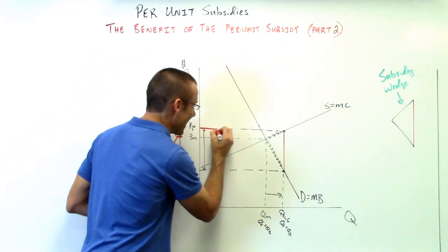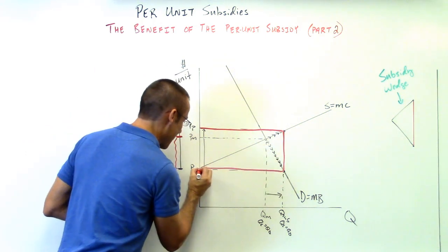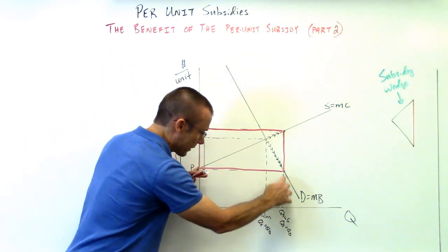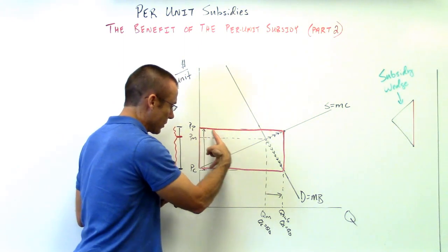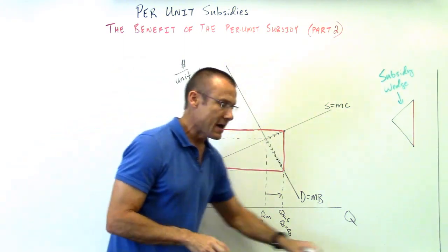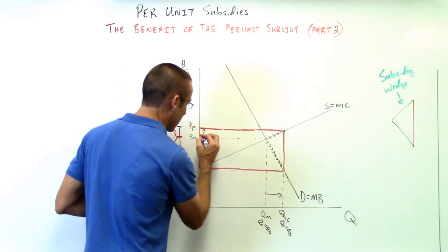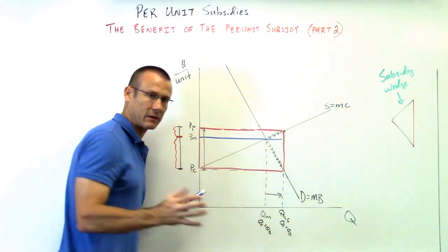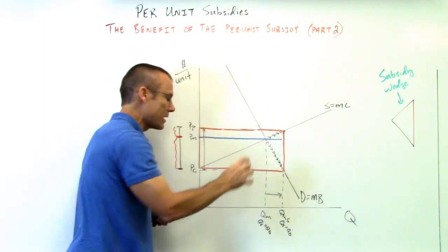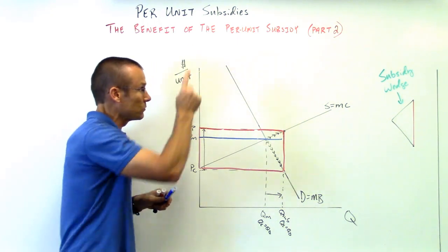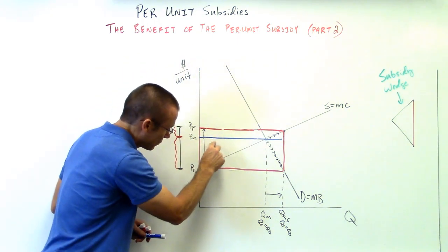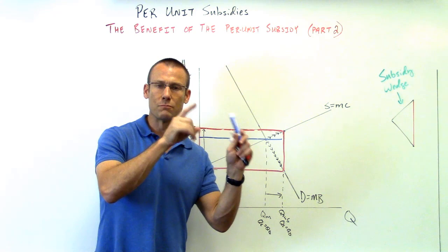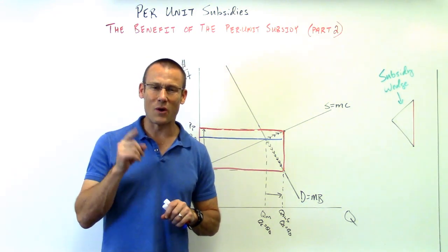To finish it off, let's do the box — the government outlay in total. Total government outlay: per unit subsidy times how many goods are sold all the way out to Q-subsidy. That whole rectangle is the government outlay. Going back to PM and drawing that blue line: the top rectangle from blue to red is the producer's benefit. The bottom rectangle from the blue line down to the red line is the consumer's benefit. They both benefit, but the consumer benefits more.